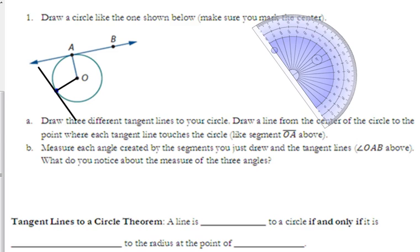So the theorem that we need to fill in the blanks for, the tangent lines to a circle theorem, says a line is tangent to a circle if and only if it is perpendicular to the radius at the point of tangency.